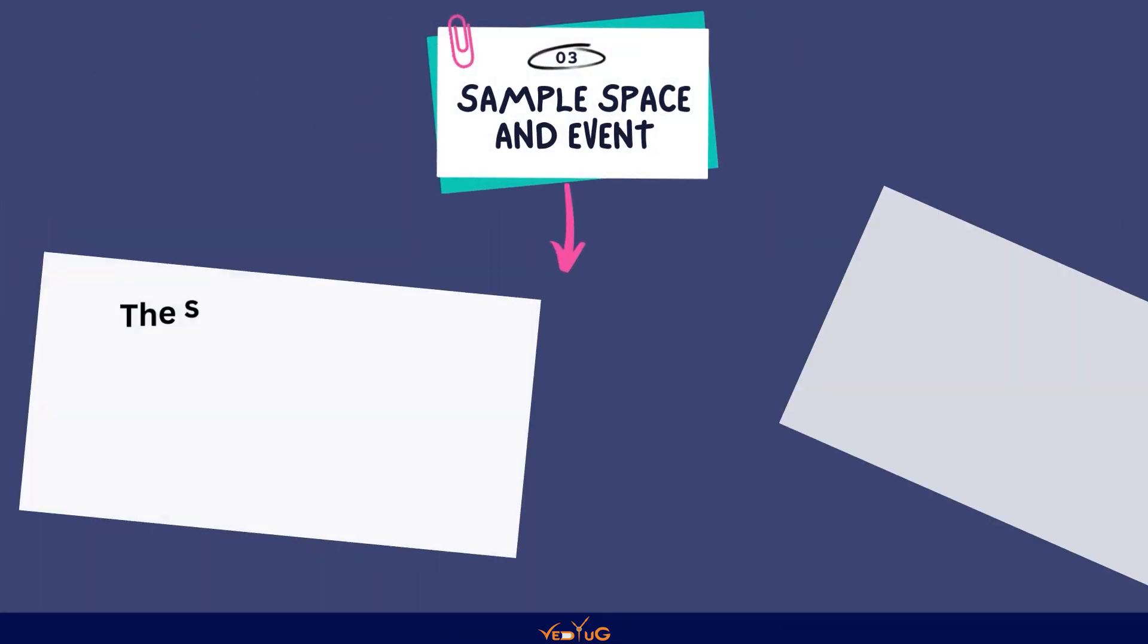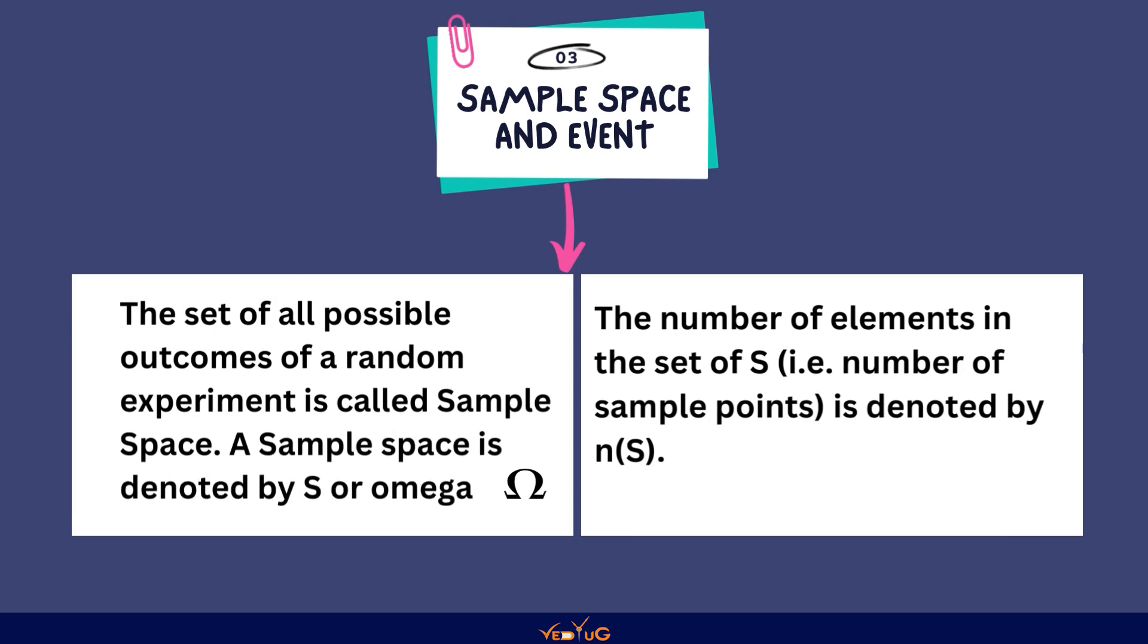Sample space and event की तरफ. The set of all possible outcomes of a random experiment is known as sample space. A sample space is denoted by capital S और omega symbol. Sample space में पूरे events के, पूरे outcomes of an experiment, sample space कहा जाता है. ये याद रखना है, ये keyword है.